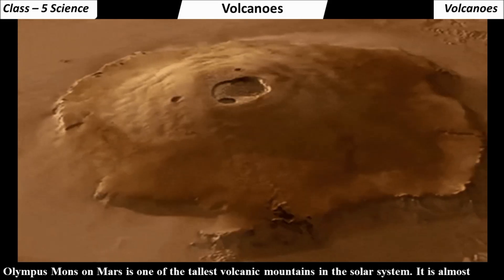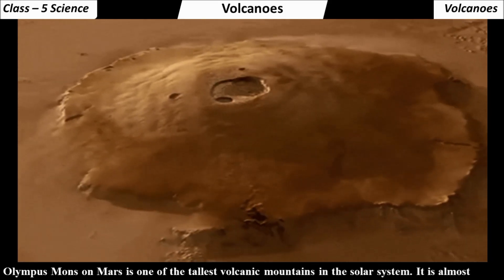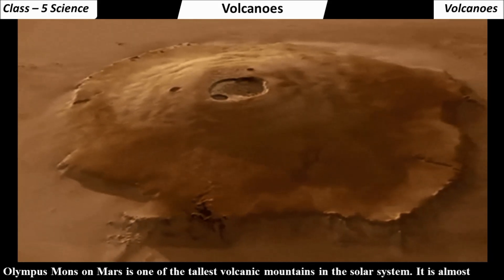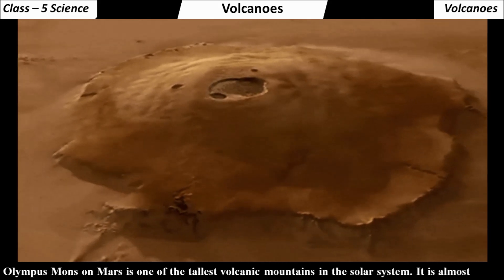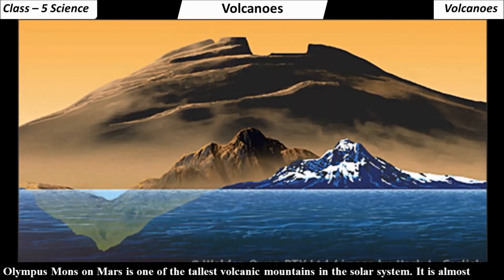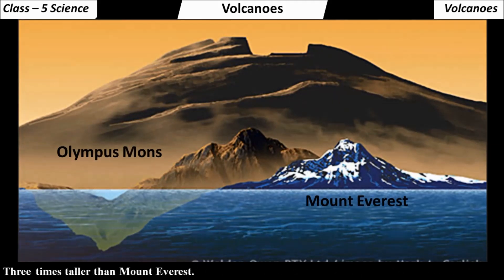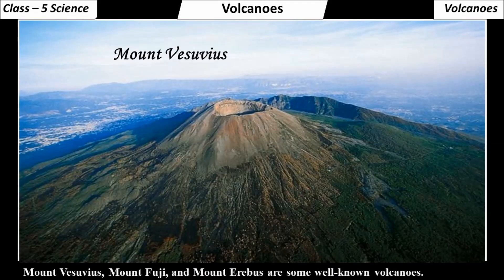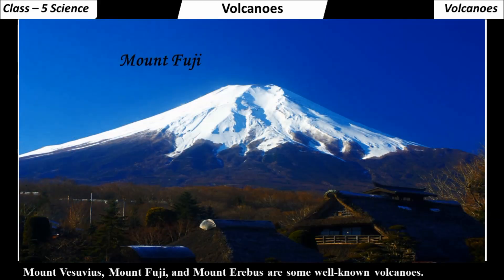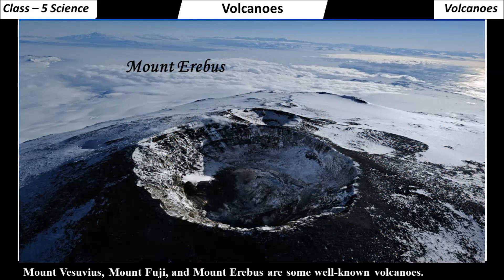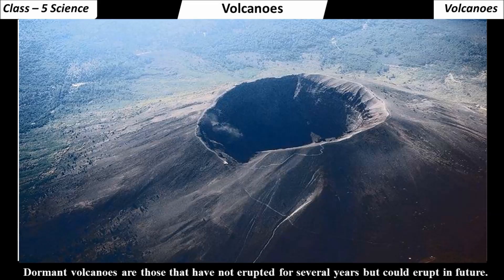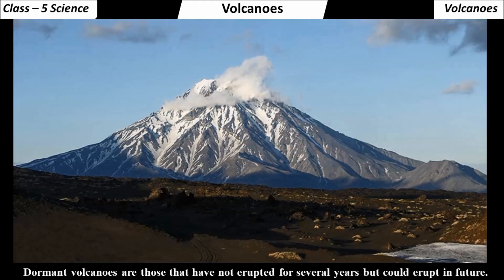Olympus Mons on Mars is one of the tallest volcanic mountains in the solar system. It is almost three times taller than Mount Everest. Mount Vesuvius, Mount Fuji and Mount Erebus are some well-known active volcanoes.